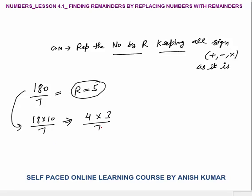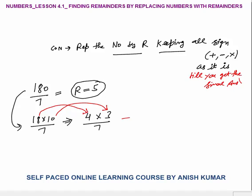So what I have done: I replaced the numbers with their remainders. My number was 18, replaced with 4; my number was 10, replaced with 3. Keeping all signs as they are: 4 into 3 equals 12. Then 12 divided by 7 gives a final remainder of 5. You can see the remainder is the same.